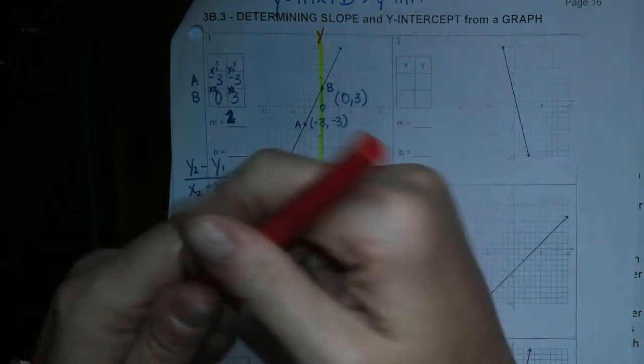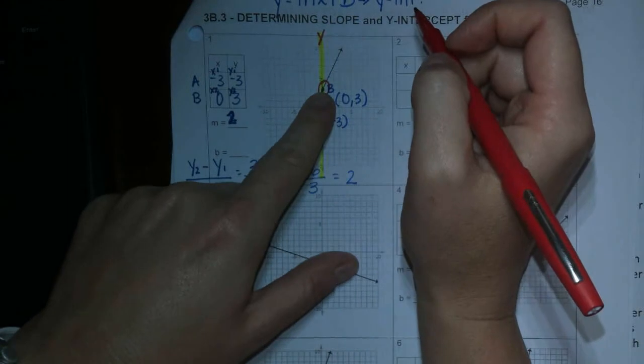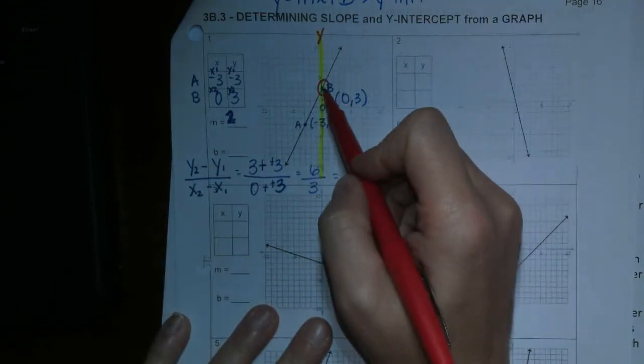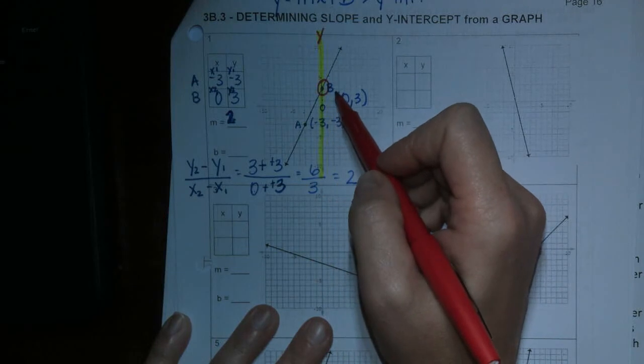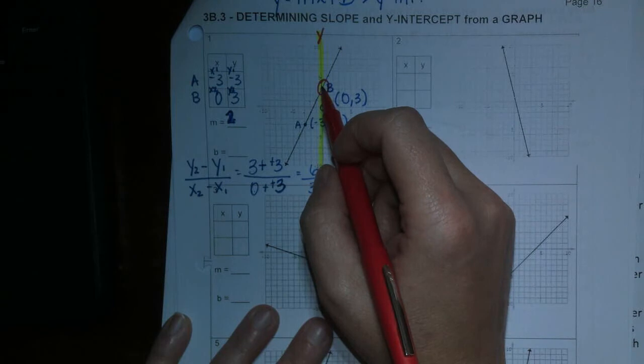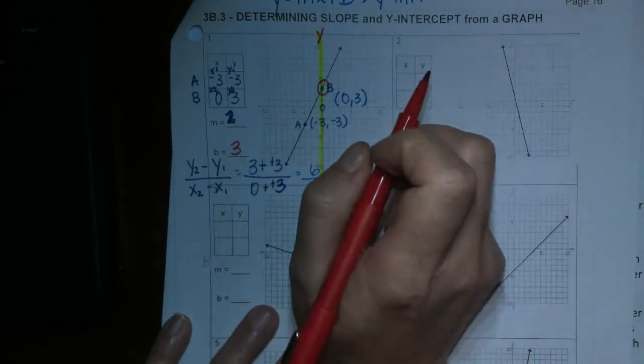And it intercepts the y-axis right there. Actually, it's at your point B, which has nothing to do with intercept being little b. So it crosses at y equals 1, 2, 3. So your b is 3.